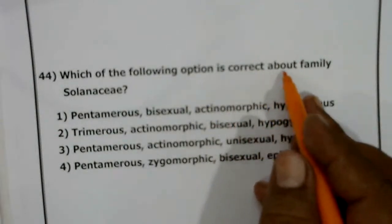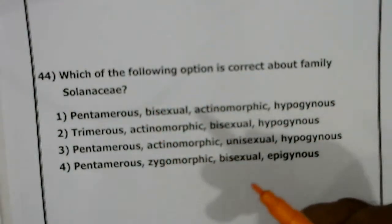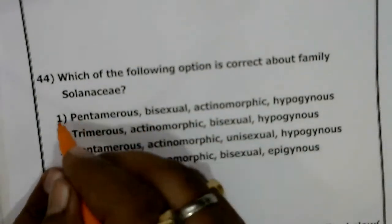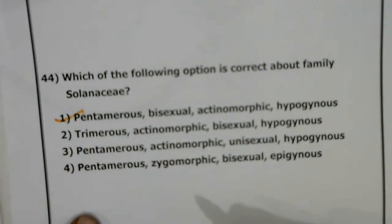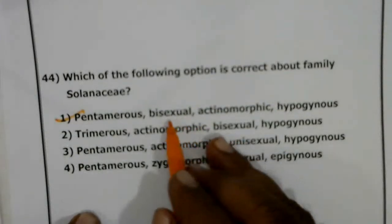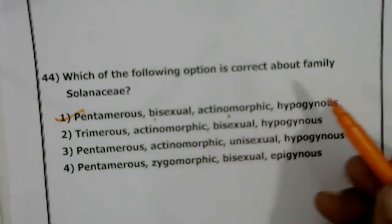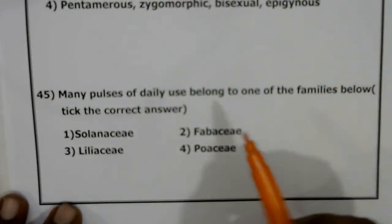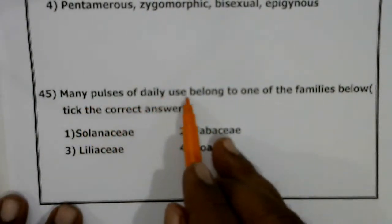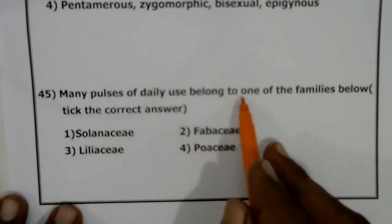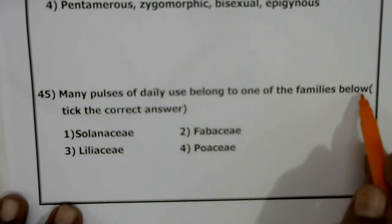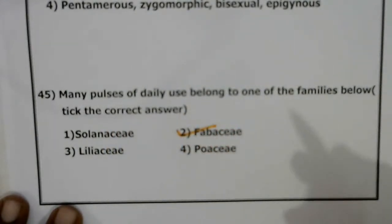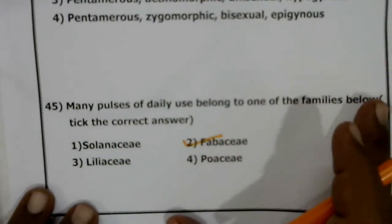Which of the following is correct about the family Solanaceae? In Solanaceae, the flowers are pentamerous — meaning sepals and petals are five. The flowers are bisexual, actinomorphic, and hypogynous. Many pulses of daily use belong to the family Fabaceae. These are all the answers. Thank you.